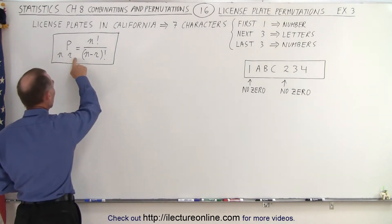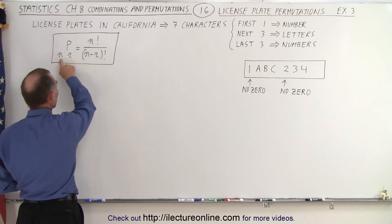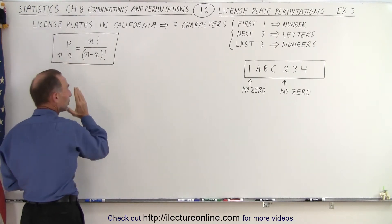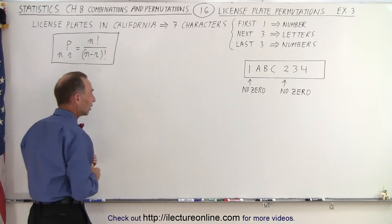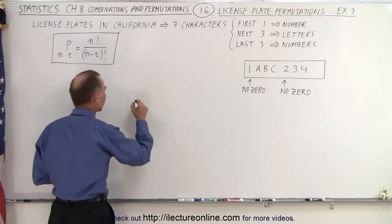So again, we use the same equation, the number of permutations of n and r. n is the number of letters or characters we're going to have. r, of course, is the number that we're dealing with. In this case, we'll have to take it one at a time, and so the following will then become the number of permutations.